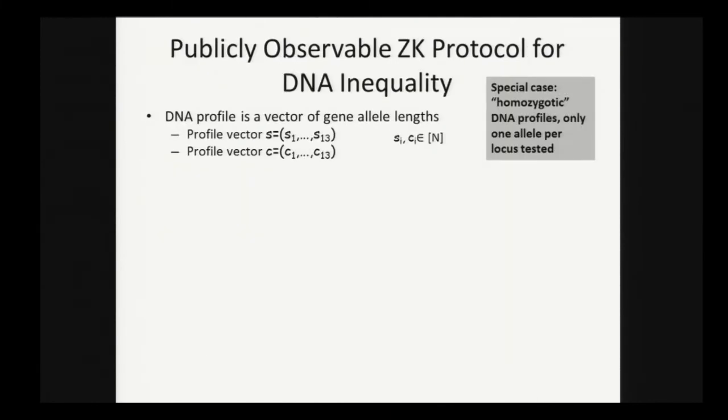We're going to construct a publicly observable protocol for DNA inequality, and it's going to use the same kind of ideas that are used to transform private coin protocols into public coin protocols in the digital context. We're going to look at the special case where the DNA profiles are homozygotic, there's only one allele in each locus tested. When they're heterozygotic, there are actually some problems introduced, and we handle that in the paper.